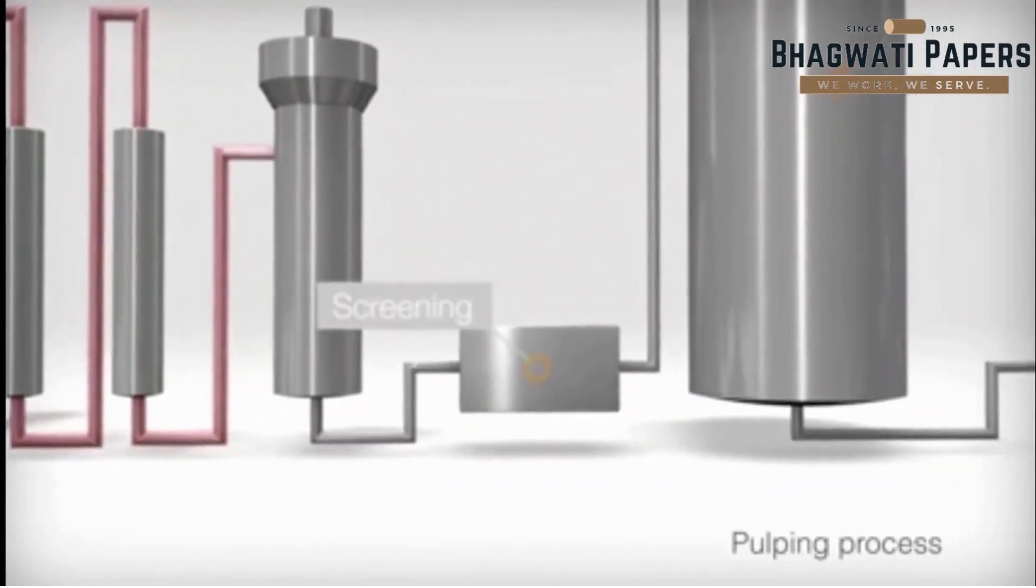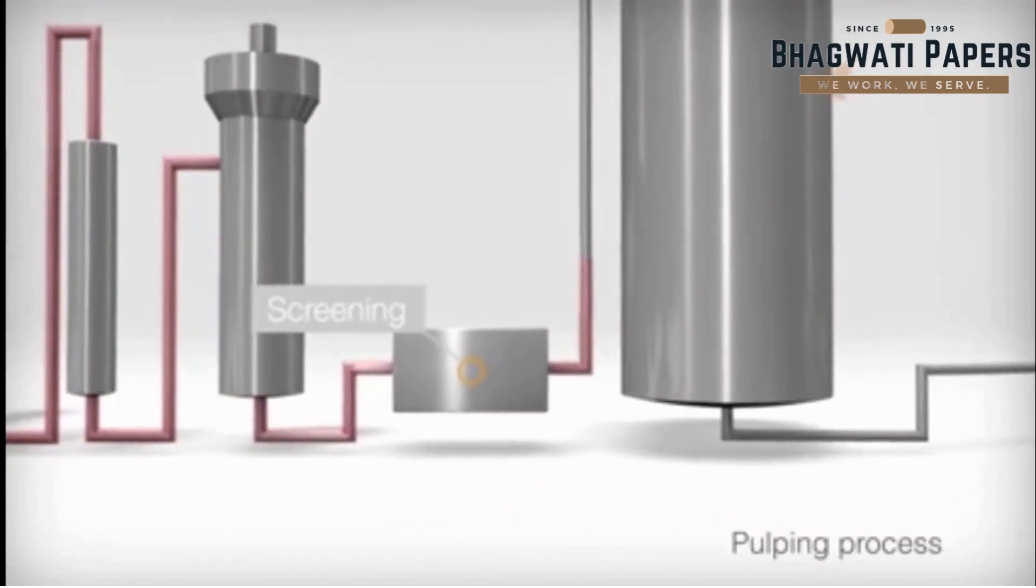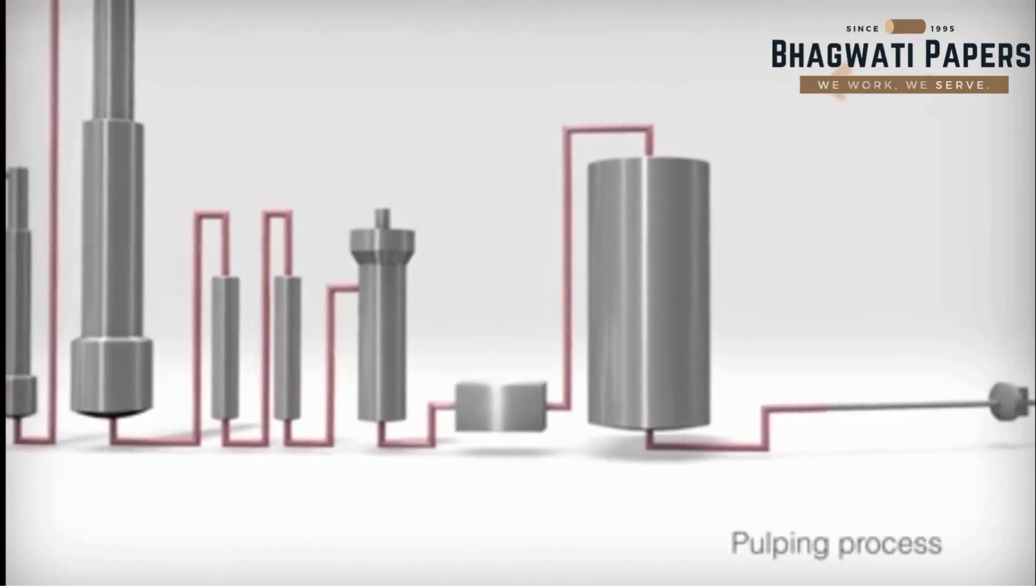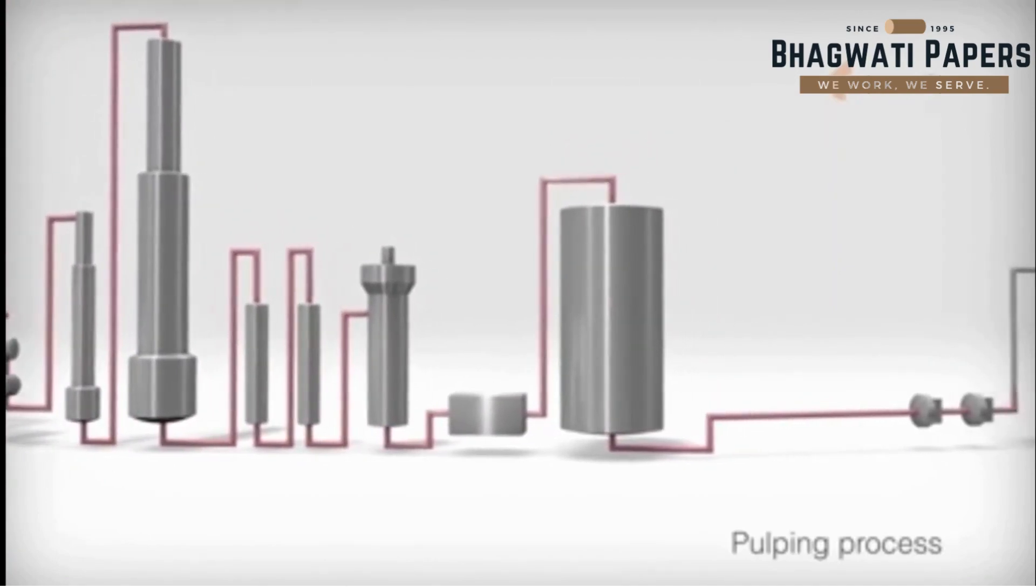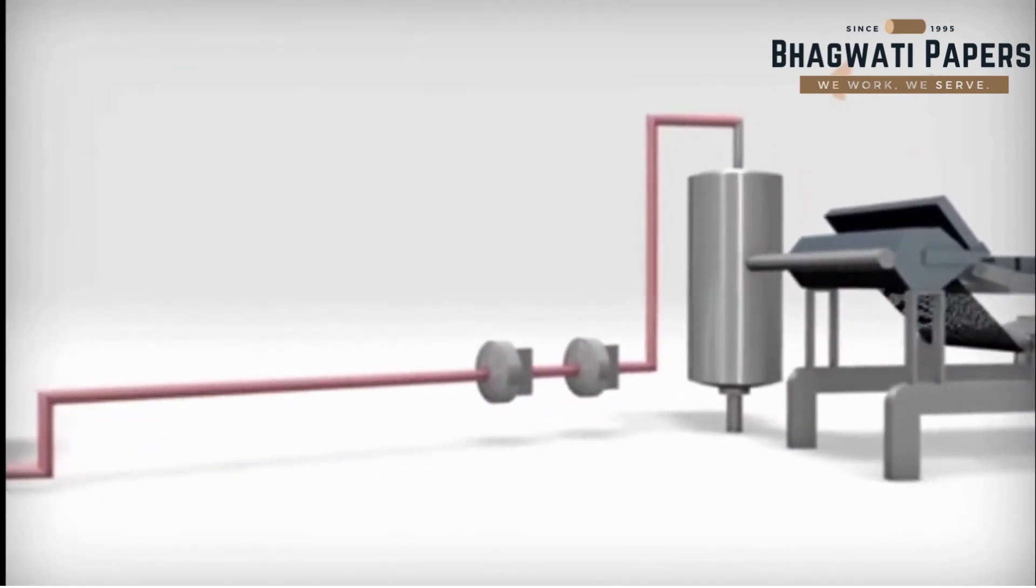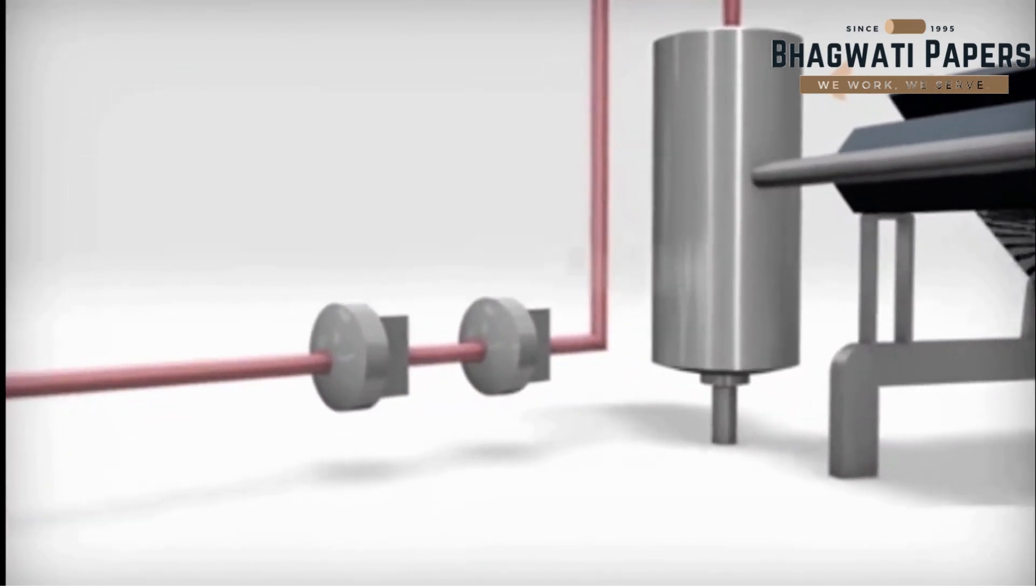In the final stage, the washed pulp is screened before being used in paper production. The papermaking process in the paper mill begins in the stock preparation plant, where the pulp is prepared by beating in low consistency refiners.